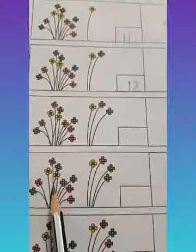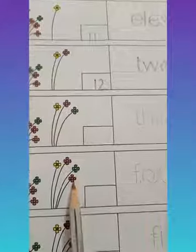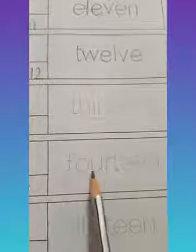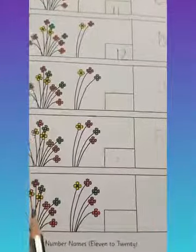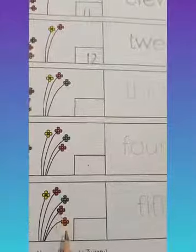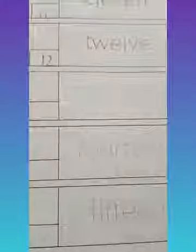Then here how many flowers? 10, 11, 12, 13 and 14. Now you are going to write the number 14. Then 10, 11, 12, 13, 14 and 15. So you have to write the number here, trace the spelling — that is the number name — and say it. F, I, F, T, E, E, N. 15.